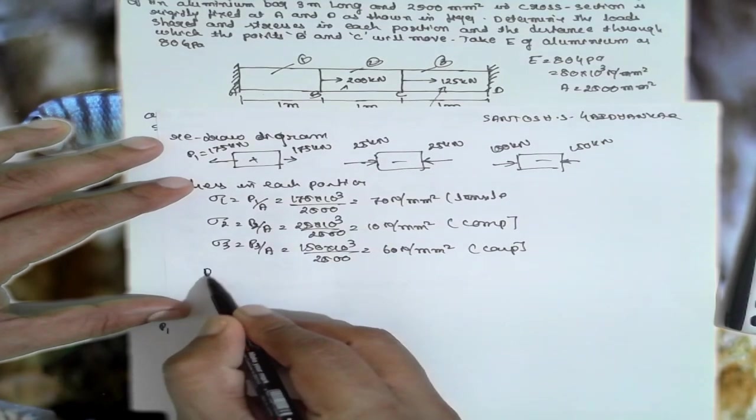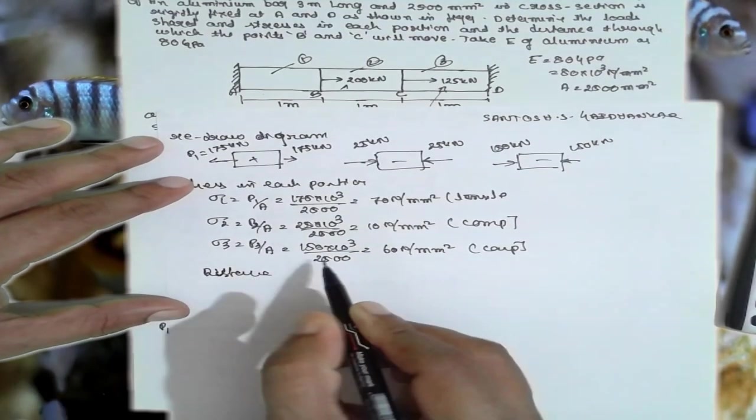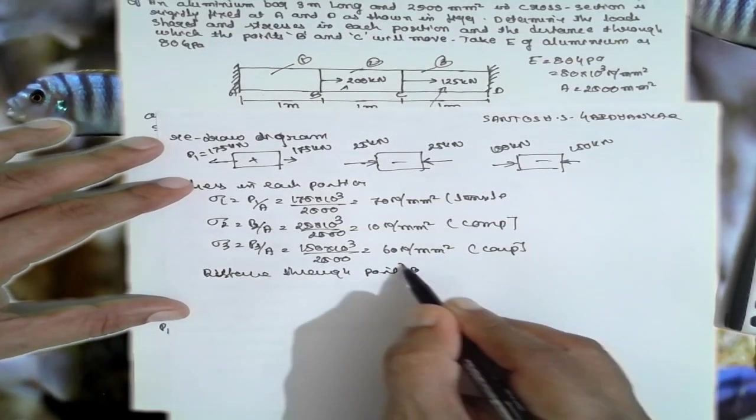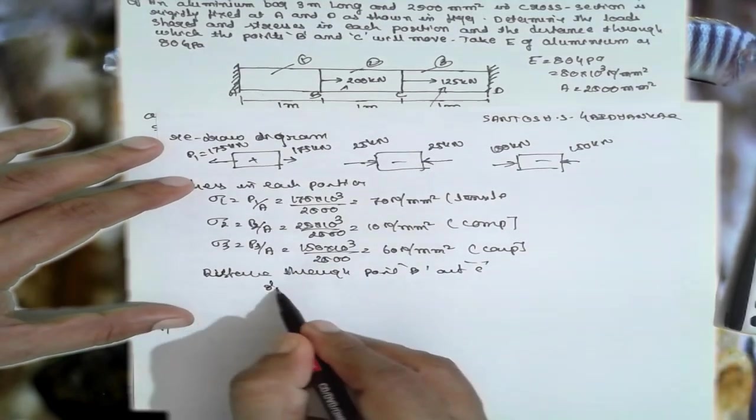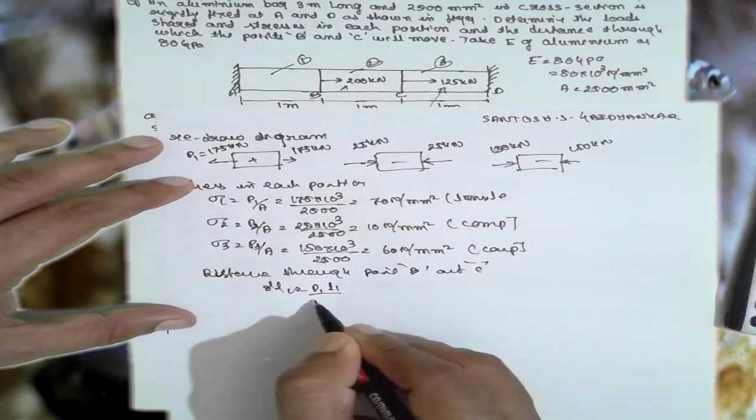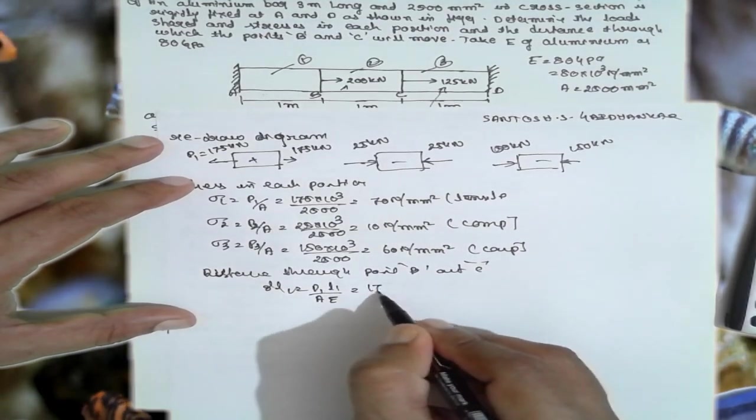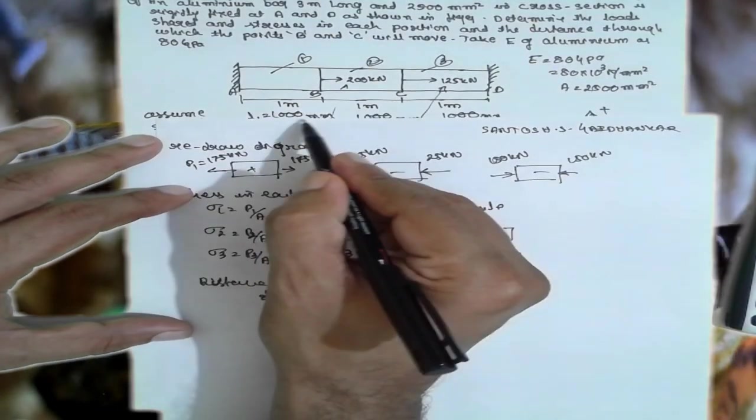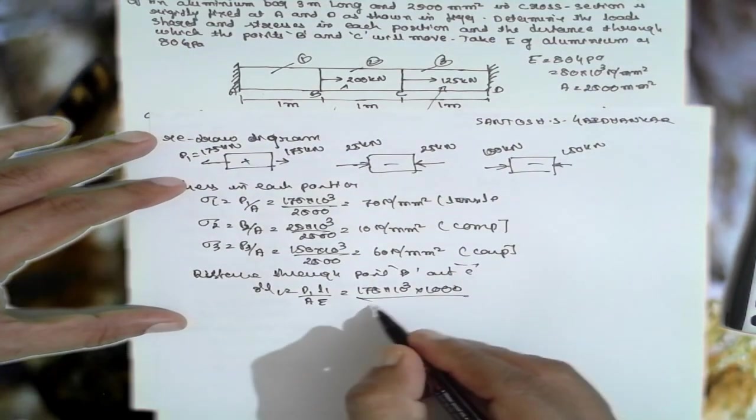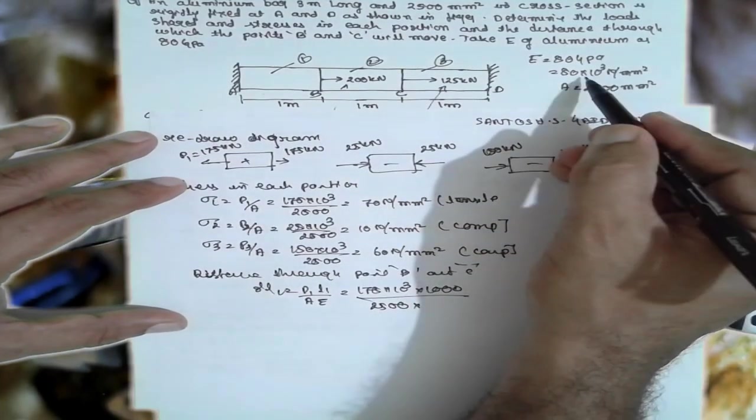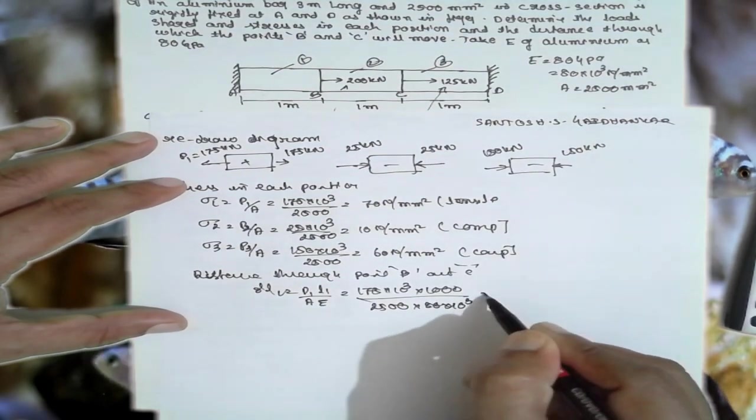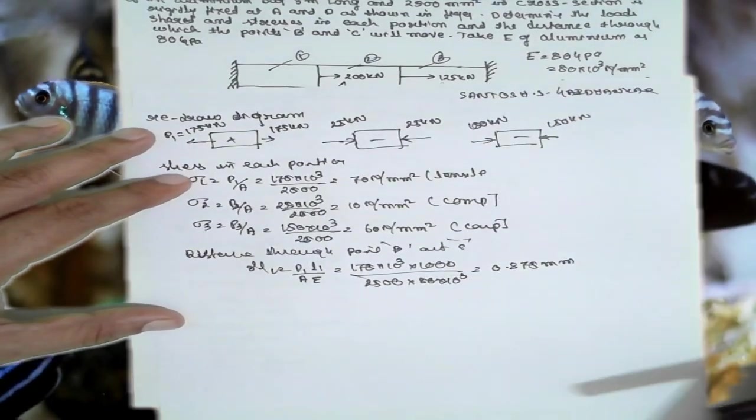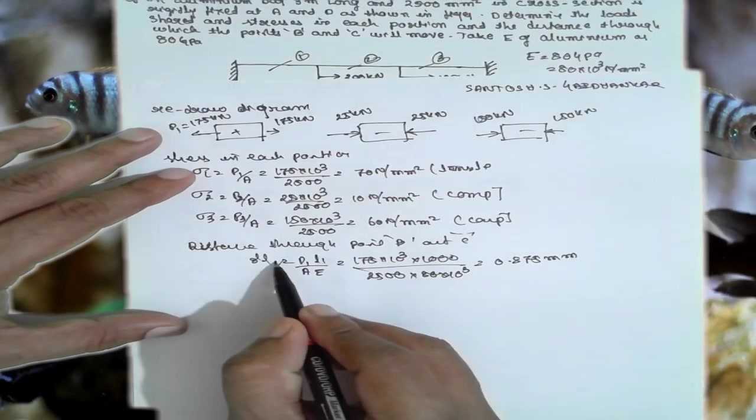The distance through point B and C, that is δL₁ = P1×L1/(A×E). What is P1? 175×10³. L is nothing but 1000. Area is 2500. Young's modulus is 80×10³. The answer is 0.875 mm. Now, this is for AB.